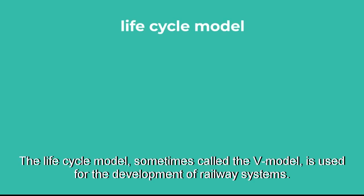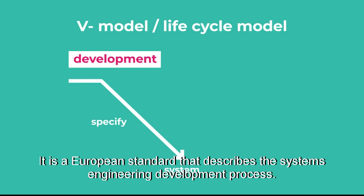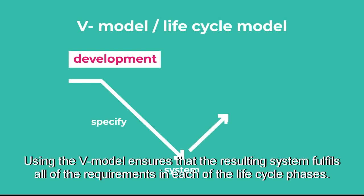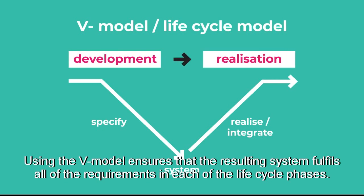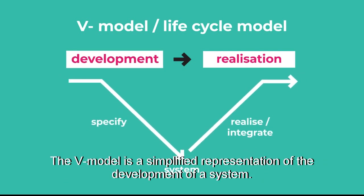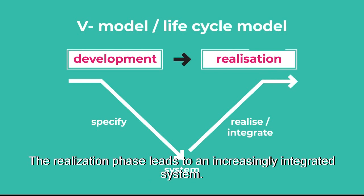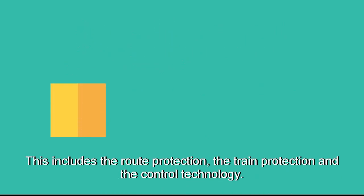The lifecycle model, sometimes called the V-model, is used for the development of railway systems. It is a European standard that describes the systems engineering development process. Using the V-model ensures that the resulting system fulfills all of the requirements in each of the lifecycle phases. The V-model is a simplified representation of the development of a system. The development phase leads to increasingly detailed specifications, while the realisation phase leads to an increasingly integrated system. This includes the route protection, the train protection and the control technology.